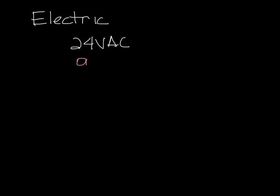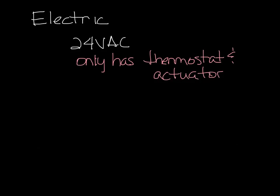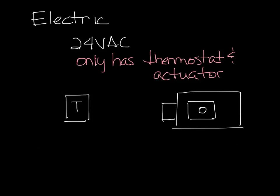In an electric control VAV box you only have a thermostat and an actuator. So let's put a thermostat over here and we'll put an actuator on the damper shaft. The actuator is just going to open and close the damper and it's just getting a signal from the thermostat.